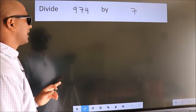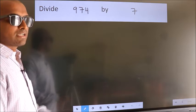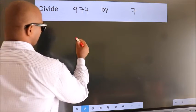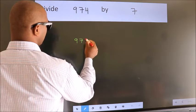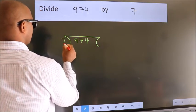Divide 974 by 7. To do this division, we should frame it in this way. 974 here, 7 here.